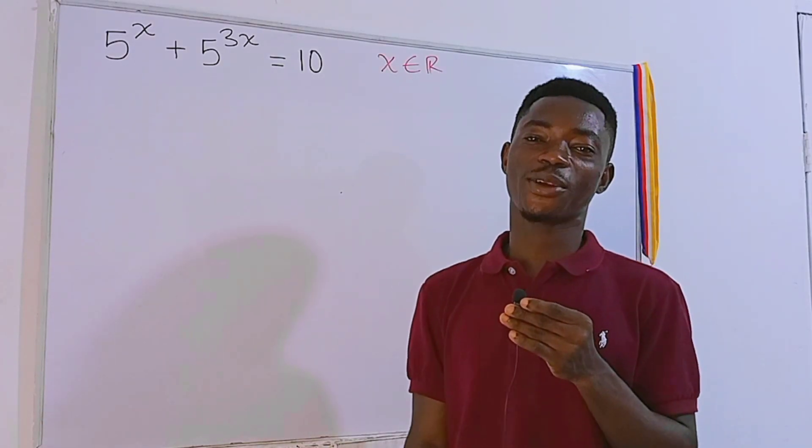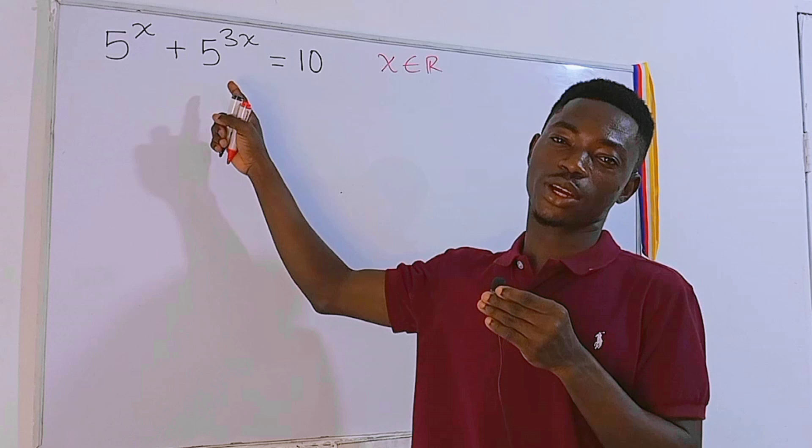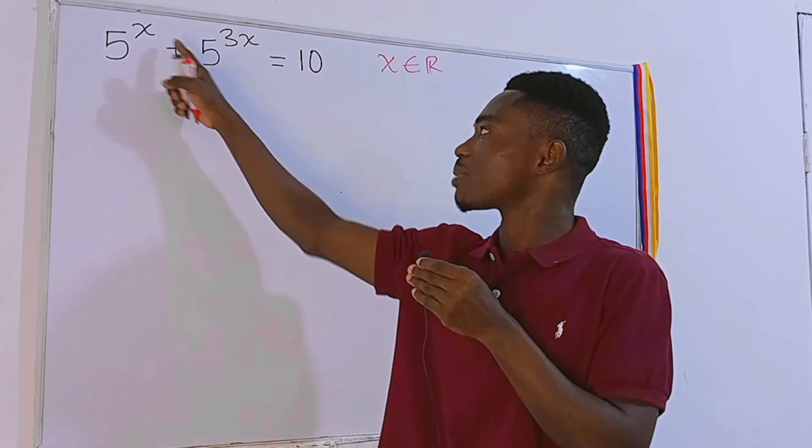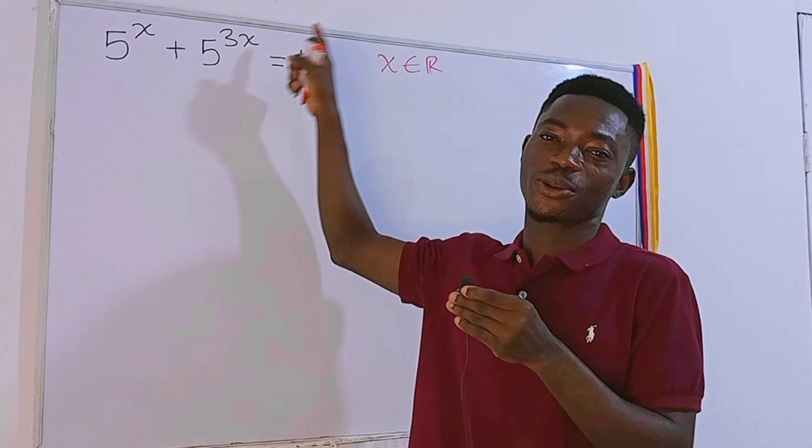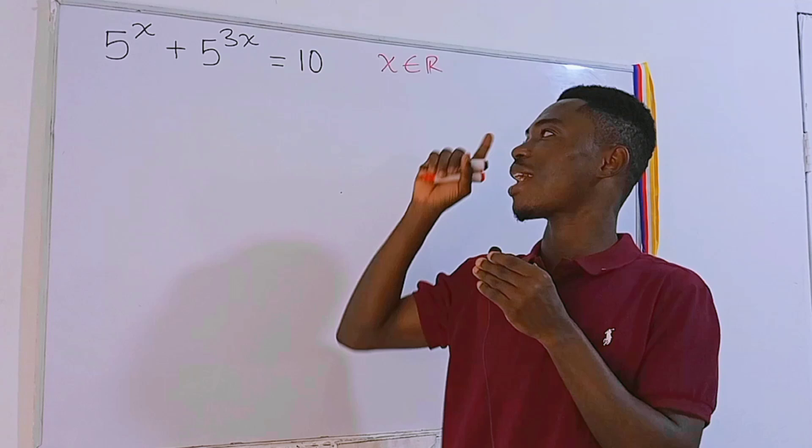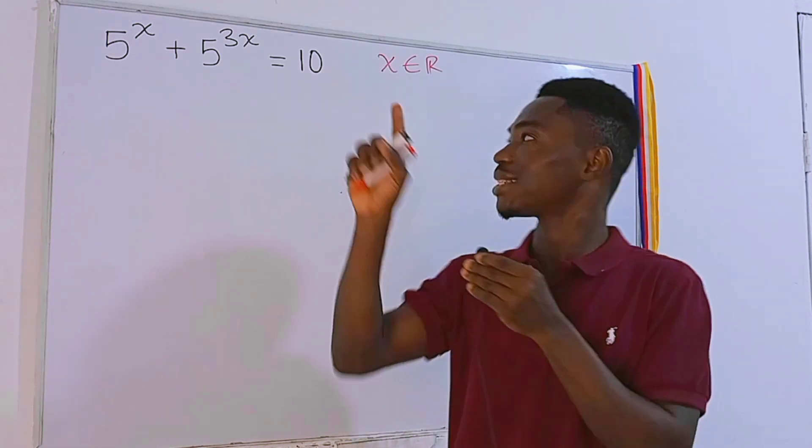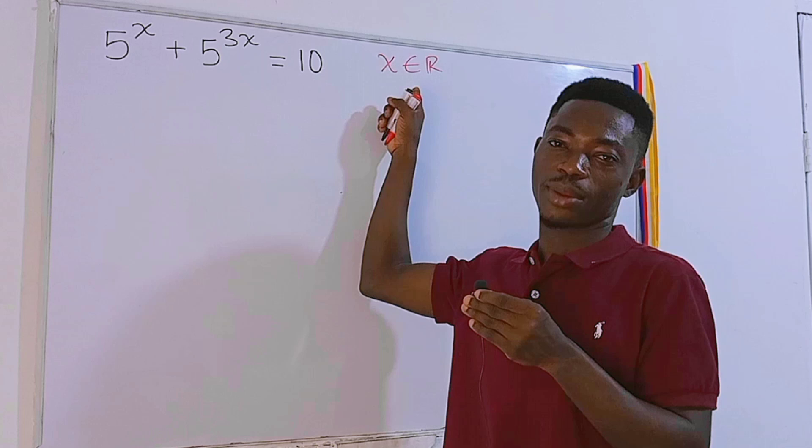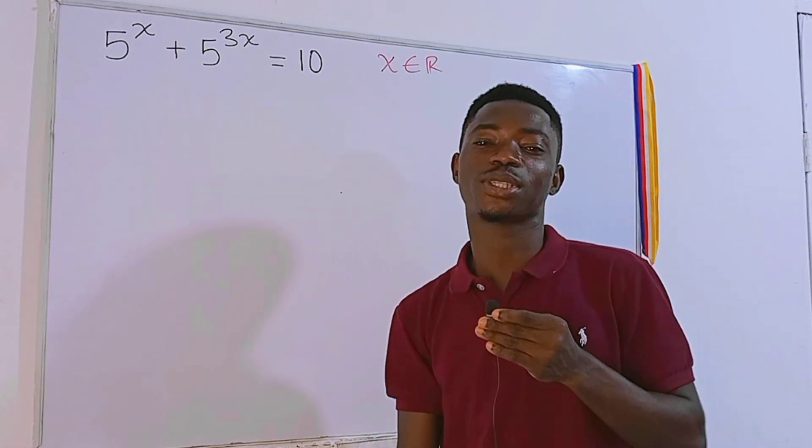Hello guys and welcome to another interesting video. We have this exponential equation: 5 to the power x plus 5 to the power 3x equals 10, and we have to figure out the value of x that is going to satisfy this equation, where x is a real number.